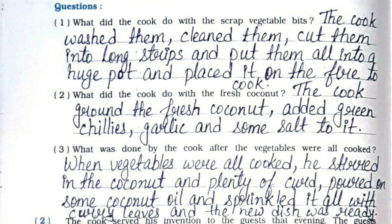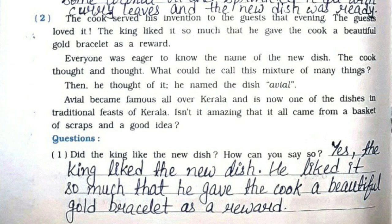First one: What did the cook do with the scrap vegetable bits? The cook washed them, cleaned them, cut them into long strips, and put them all into a huge pot and placed it on the fire to cook. Second: What did the cook do with the fresh coconut? The cook ground the fresh coconut and added green chilies, garlic, and some salt to it. Third: What was done by the cook after the vegetables were all cooked? When vegetables were all cooked, he stirred in the coconut and plenty of curd, poured on some coconut oil, and sprinkled it all with curry leaves, and the new dish was ready.